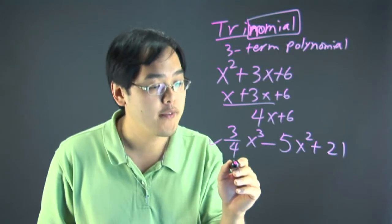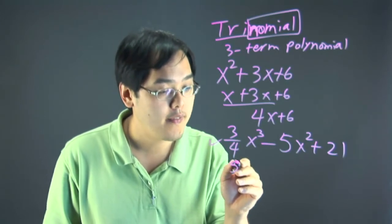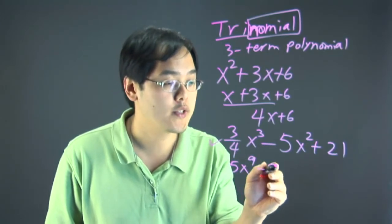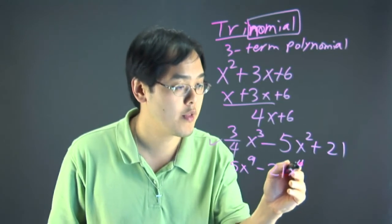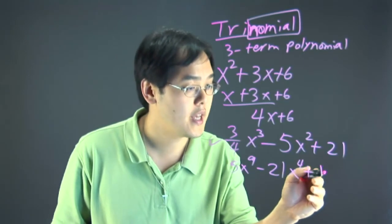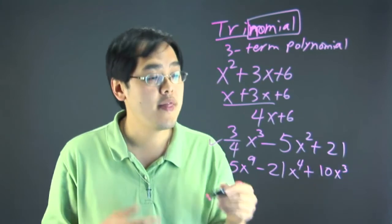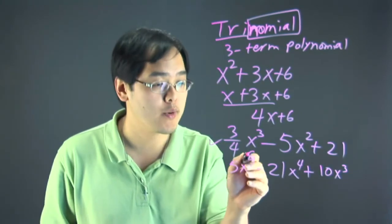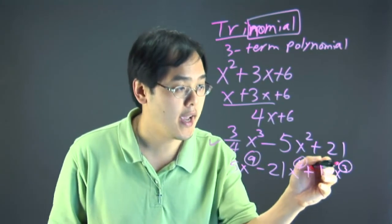And just another quick example here, if you have 5x to the 9th minus 21x to the 4th plus 10x to the 3rd, that's a trinomial because all the powers of x are very distinct.